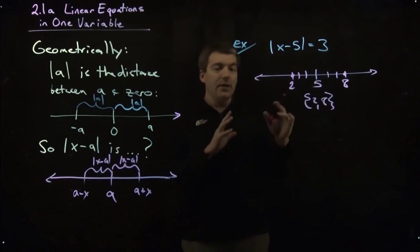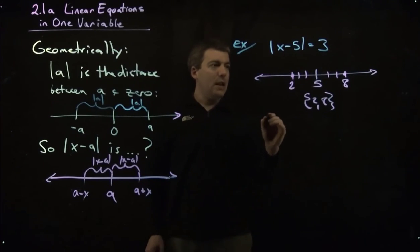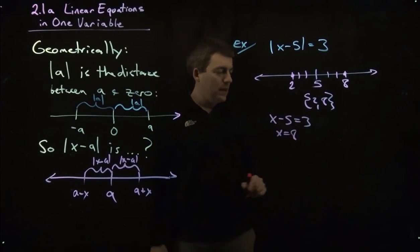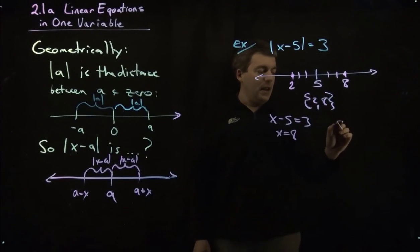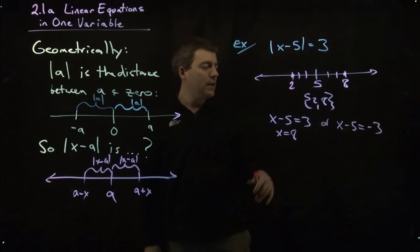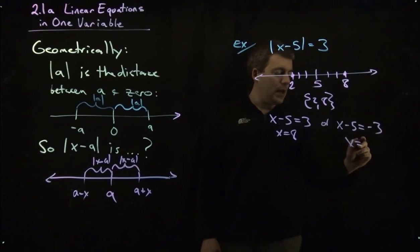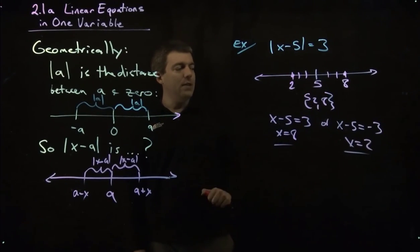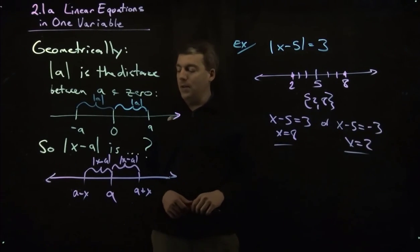Solving that algebraically as we did before, what we do is we take X minus 5, set it equal to 3, add the 5, and get the 8. We can also take the X minus 5 and set that equal to negative 3. That will be the other part. Add the 5, we get X equals 2. So there's your solutions algebraically, and then we did this graphically.